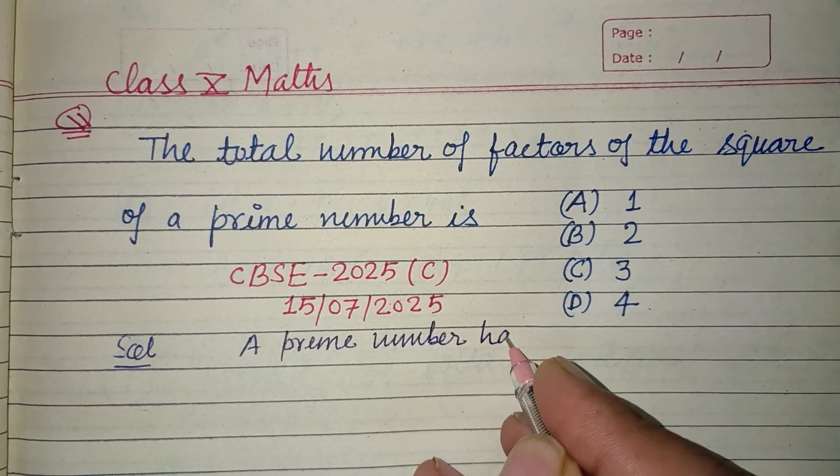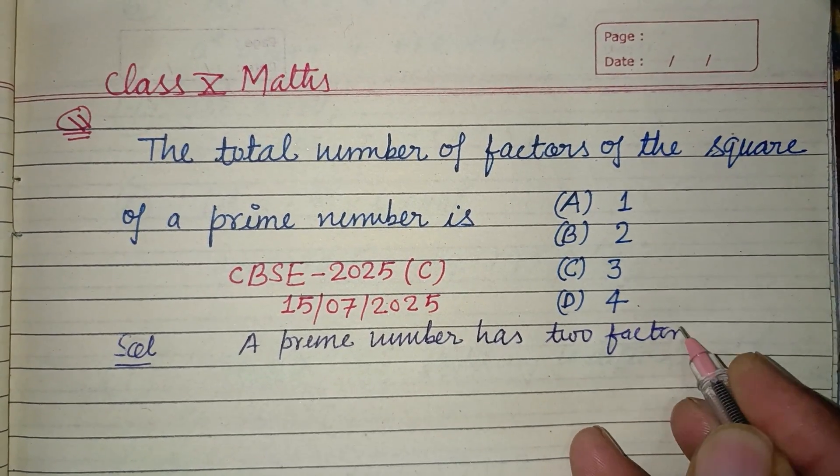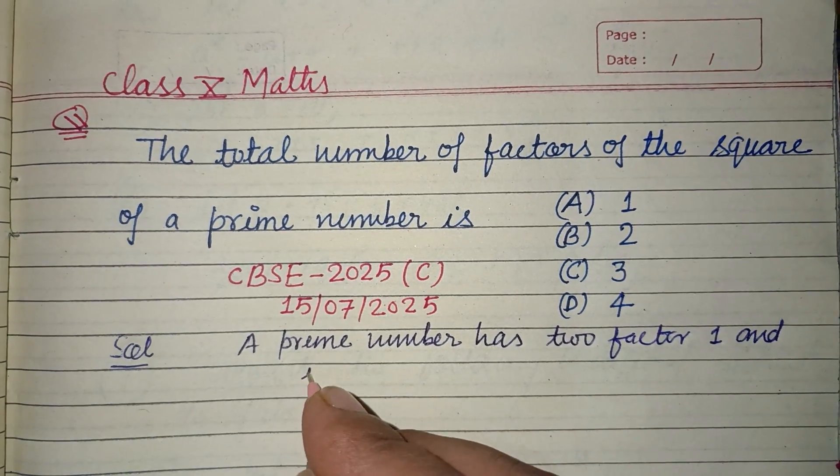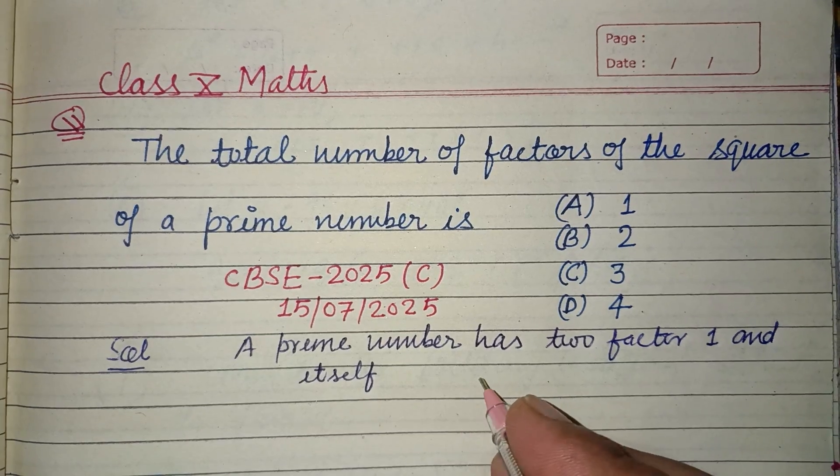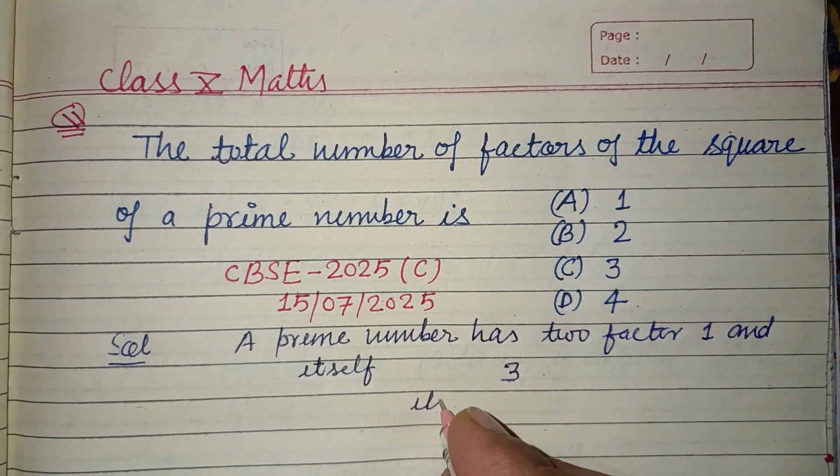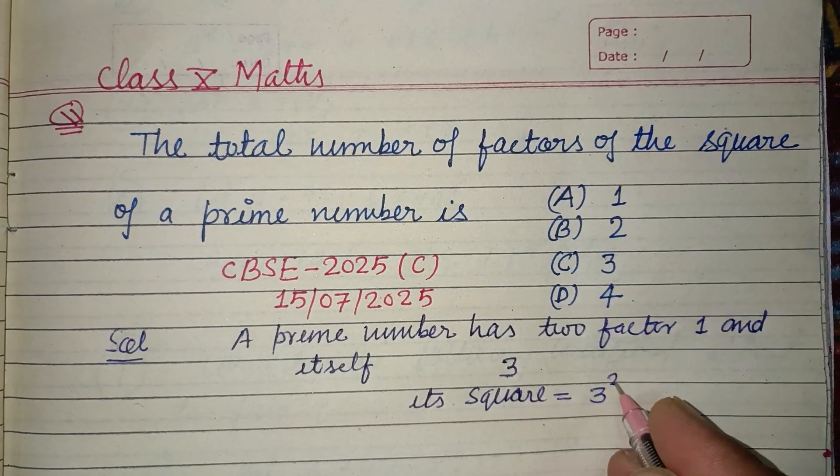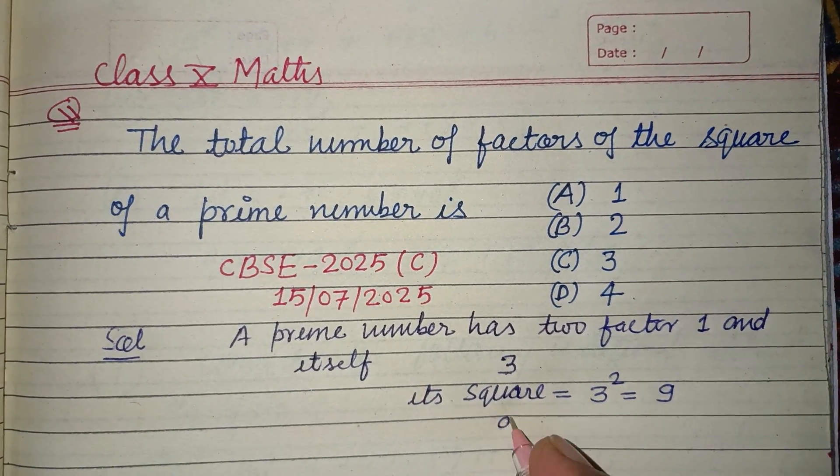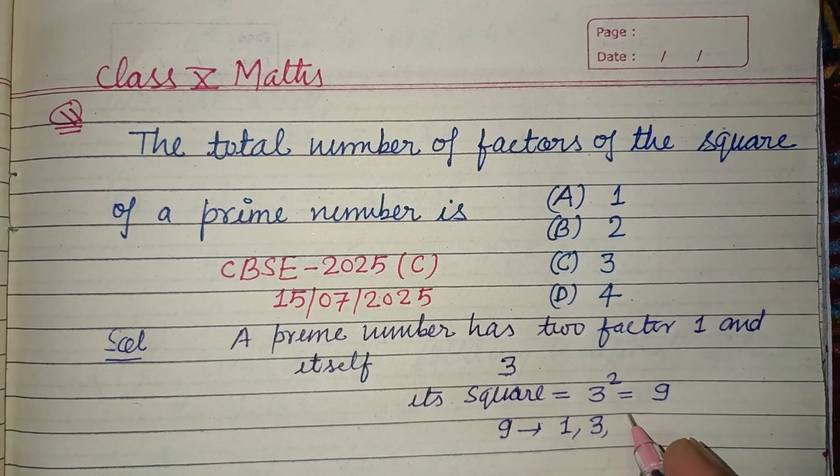A prime number has two factors: one and itself. Let a prime number be three. Its square, three squared, is nine. So how many factors does nine have? Nine has factors one, three, and nine.